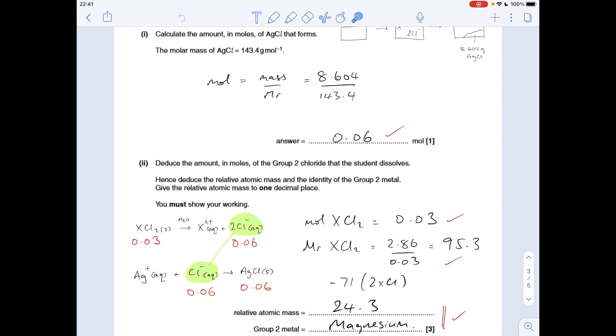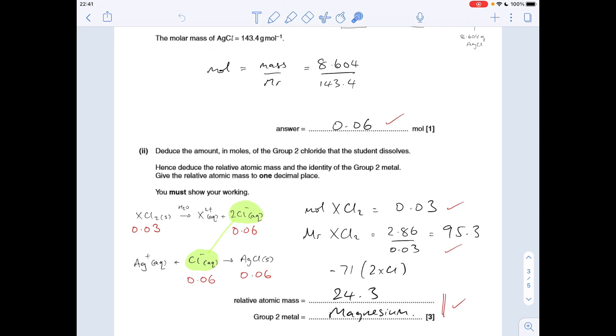We can get the Mr for XCl₂ now: mass over moles is 95.3. Subtract the 71 for the two chloride ions, so that leaves you with an Mr to one decimal place for the metal of 24.3. It's in group two so it's got to be magnesium.